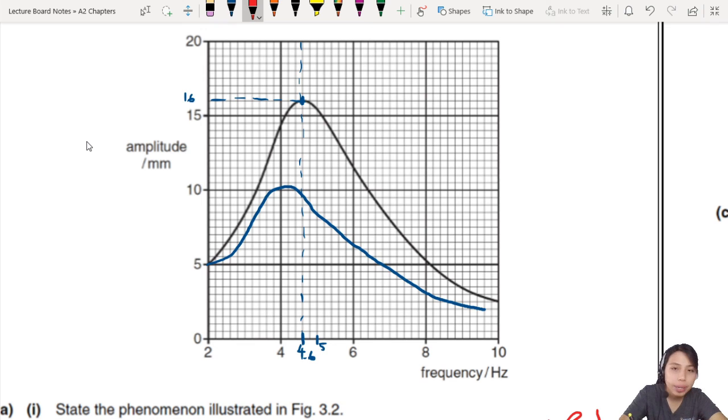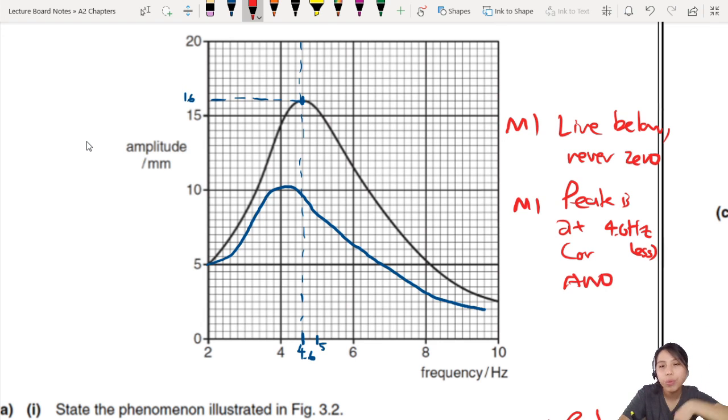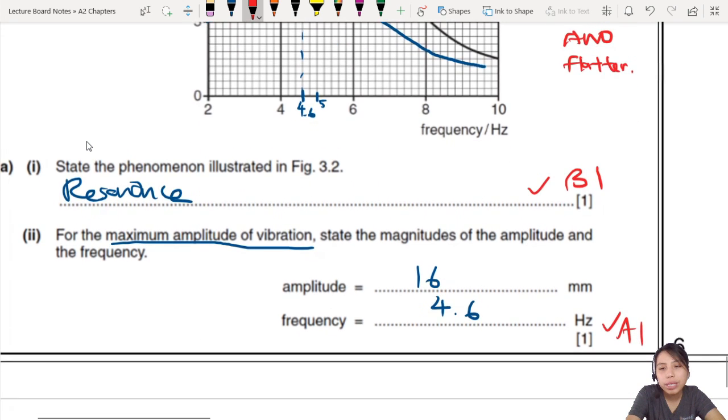So, the points come from, first one, if your line is below the original and never zero. That is the first mark. A second mark comes if your peak is at a slightly lower frequency, at 4.6 Hz or lower, and flatter. The peak is flatter. So, lower. Flatter. So, that's the two ideas you want to see.